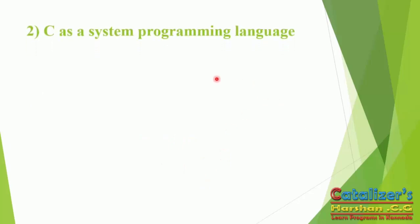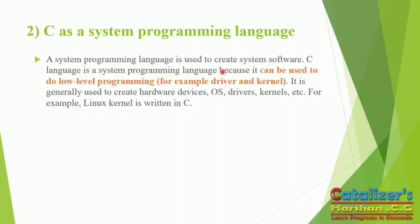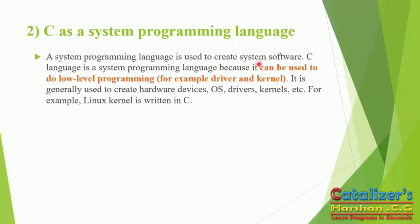C is a system programming language because it is used to do low-level programming. System software is computer software which is used to control and coordinate the computer hardware and to provide an environment for executing application software.